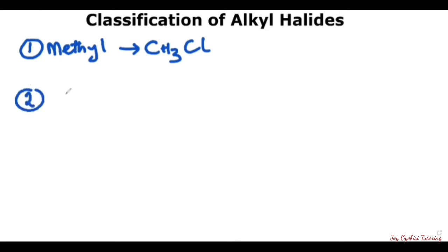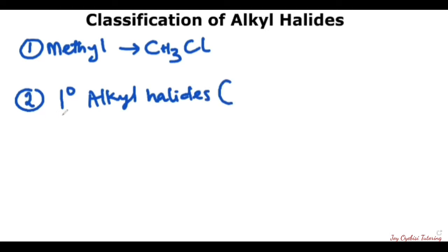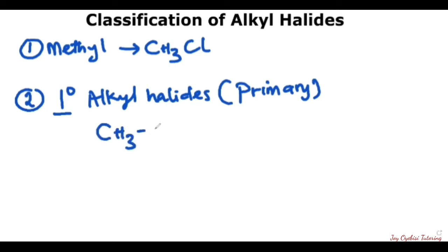The second classification would be the primary alkyl halide. An example of this would be CH3CH2Br. How do you know that this is a primary alkyl halide? It is by looking at the carbon that has the halogen.